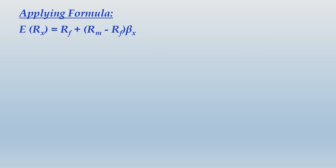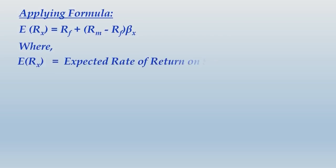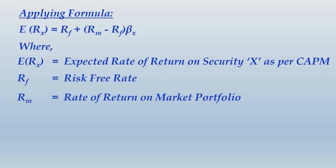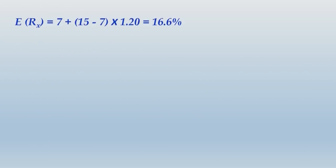Applying the CAPM formula: ERX equals RF plus (RM minus RF) into beta of X. Define all variables: RF = 7%, RM = 15%, beta of X = 1.2. Therefore ERX = 7 + (15 − 7) × 1.2 = 7 + 9.6 = 16.6%.